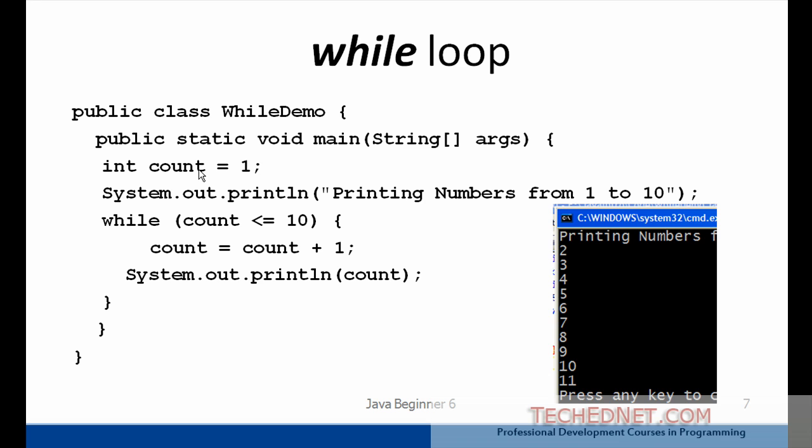What happens is, we have the initial value of count set to 1. So you enter the while loop, and since count is less than or equal to 10, the condition is true, you are going to enter the while loop, the count is going to be incremented by 1. So count now becomes 2, and you are going to print the value of count. That's why the first value that is printed in this program is 2.